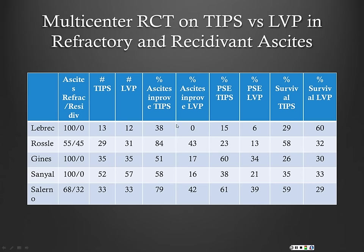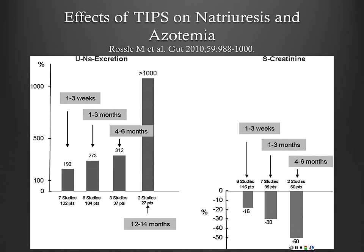As for complications of TIPS: portosystemic encephalopathy increases dramatically — the risk of irreversible PSE increases significantly in patients with TIPS. However, ascites typically does better in patients with TIPS compared to large-volume paracentesis, as you would expect since LVP is just temporarily treating them.